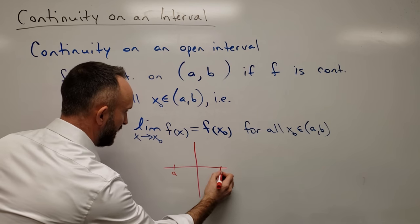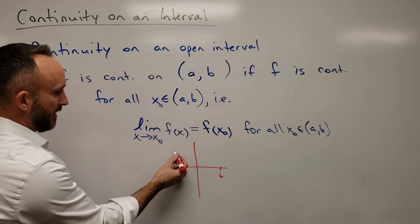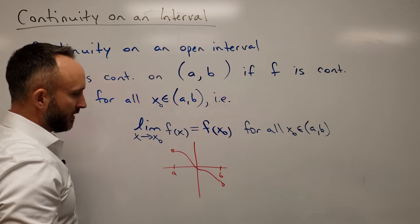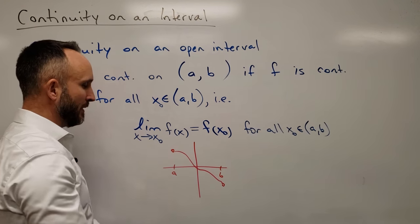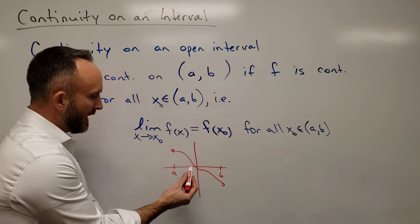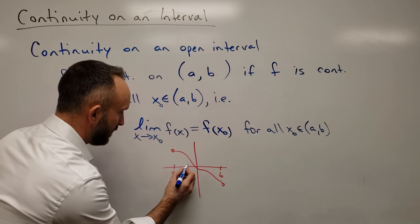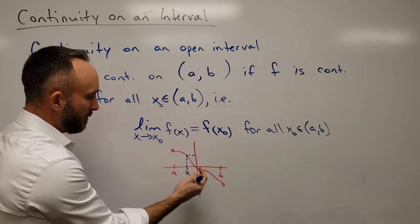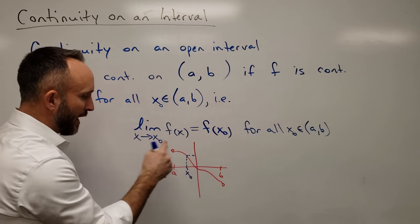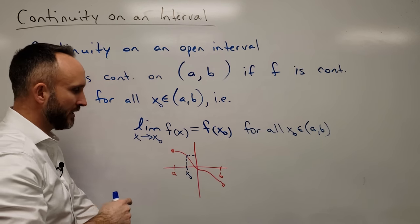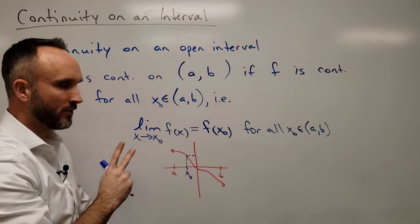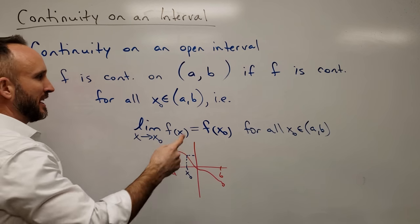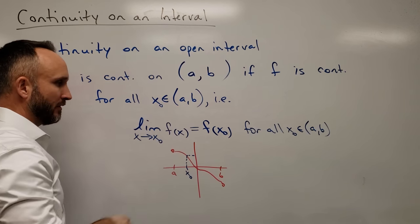If you were to draw a picture of this, let's say here's a, here's b, with open circles there, and your graph does this type of thing — this function is continuous on the open interval from a to b. Because no matter what x-naught you choose between a and b, the limit from both sides equals the output of the function. That's continuity on an open interval: it just means it's continuous at every x value in that interval.